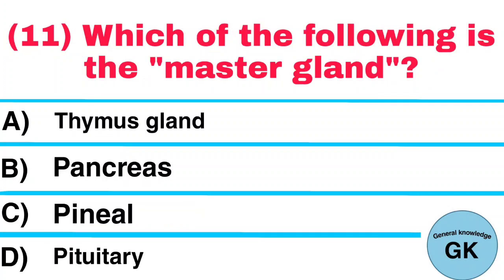Question number 11. Which of the following is the master gland? A. Thymus gland. B. Pancreas. C. Pineal. D. Pituitary. Answer: Pituitary.